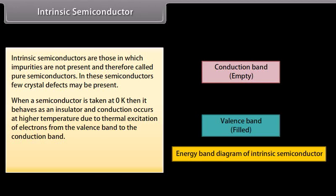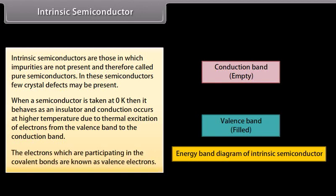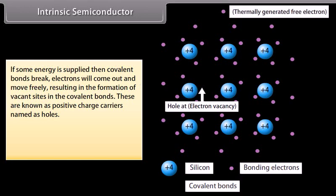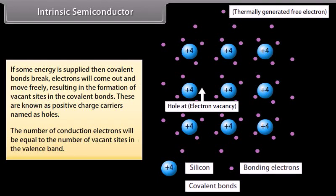Consider silicon, which has four valence electrons. In order to gain stability, it has to make four covalent bonds. The electrons participating in the covalent bonds are known as valence electrons. If some energy is supplied, covalent bonds break. Electrons come out and move freely, resulting in the formation of vacant sites in the covalent bonds. These are known as positive charge carriers, called holes. The number of conduction electrons equals the number of vacant sites in the valence band.